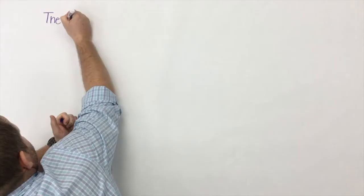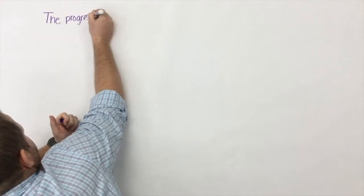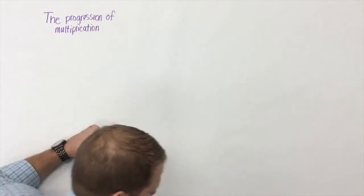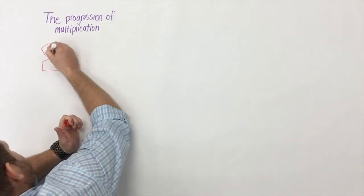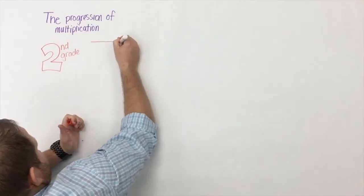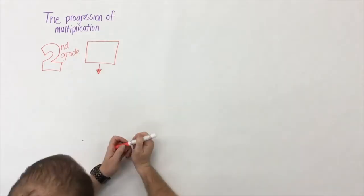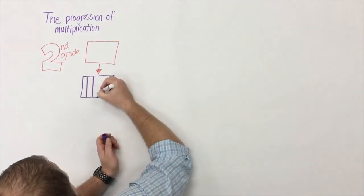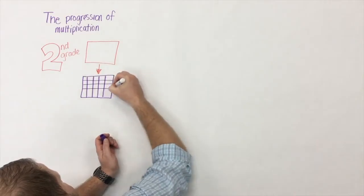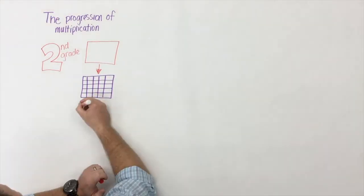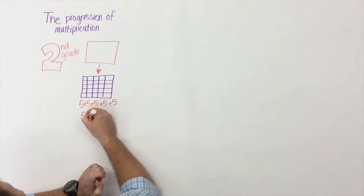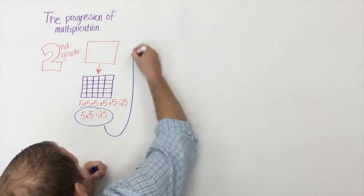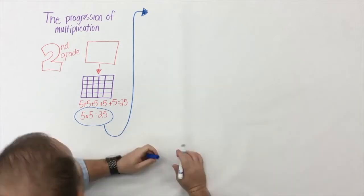Here's my attempt to explain the progression of multiplication. Most of us might think it starts in third grade, but in actuality it starts in second grade, where students are expected to take a square or a rectangle and partition it into no more than five rows or five columns. Here the understanding of repeated addition is established: 5 plus 5 plus 5 plus 5 plus 5 is 25.